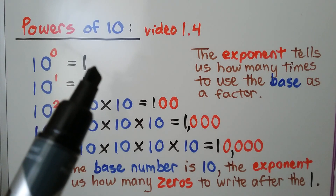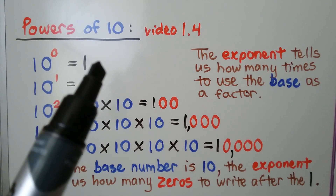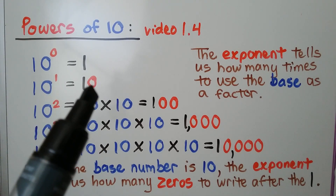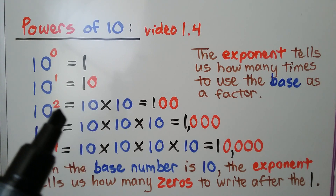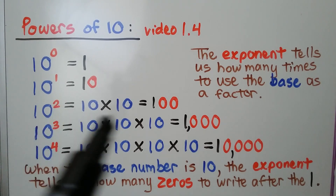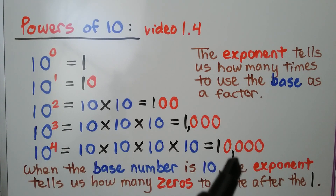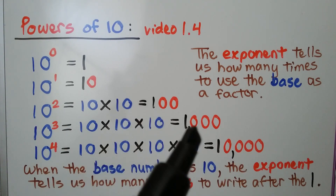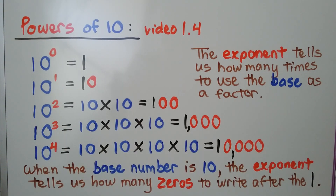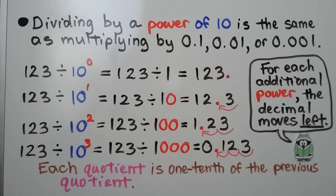We have a zero exponent — we have zero zeros. One exponent — one zero. Two for an exponent — two zeros. Three for an exponent — three zeros. Four for an exponent — four zeros. They're written after the number one. Dividing by a power of 10 is the same as multiplying by one-tenth, one-hundredth, or one-thousandth.